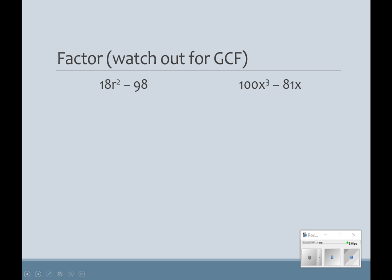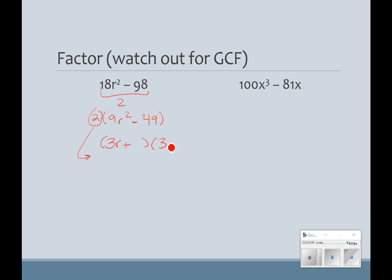Here's our friend, the greatest common factor — we don't want to forget it. If I divide by 2, I'm going to get 2 times (9r squared minus 49). That was my greatest common factor. Just like when we're factoring, let's tuck it away for later. We can see that 9 is a perfect square and 49 is a perfect square. So the square root of 9 is 3, giving us 3r, and the square root of 49 is 7. For my final answer, I'm going to remember that 2 I tucked away. So don't forget about the greatest common factor.